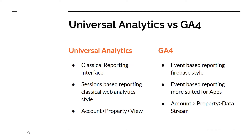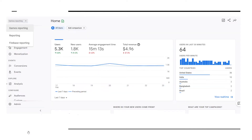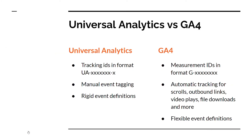The classical reporting interface makes way for a new sleek interface. Here is a quick snapshot of the new sleek interface of GA — looks cool, doesn't it? Here are some more changes from Universal Analytics to GA4: Tracking ID is now called Measurement ID, though that doesn't make a huge change from a usage perspective.